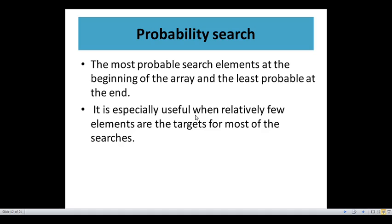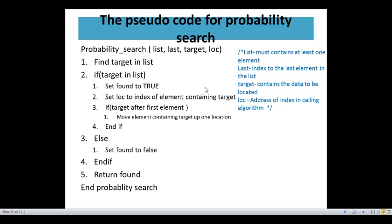Next is a probability search. Probability search means the most probable search element is placed at the beginning of the array, and the least probable at the end. It is especially useful when relatively few elements are the targets for most of the searches. Let's see the pseudocode for this.